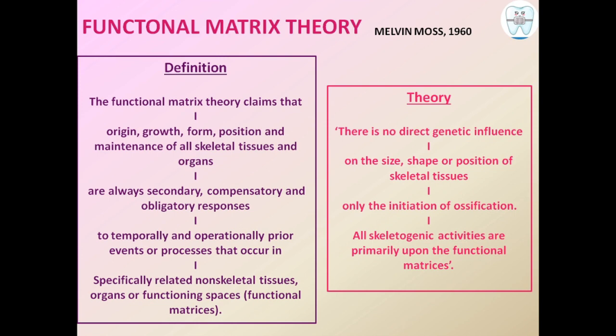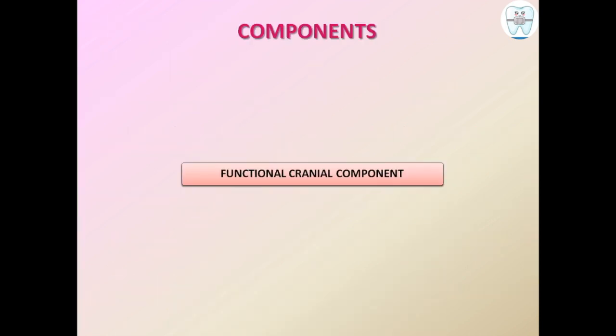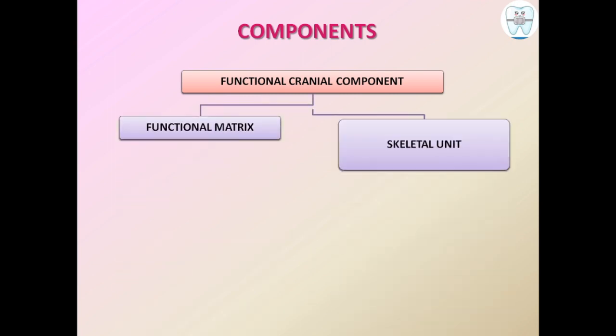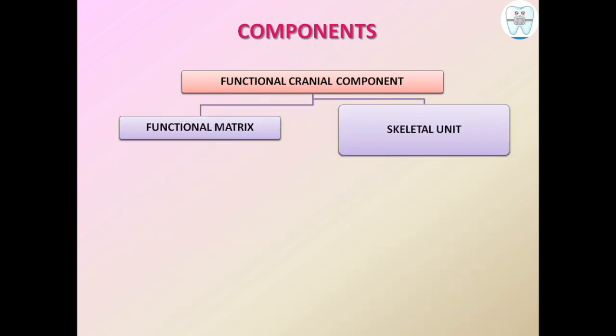The activities of skeletal tissues — origin, growth, form, function, and maintenance — are all governed by functional matrices. The components of Functional Matrix Theory, also called the Functional Cranial Component, are two: one is the Functional Matrix and the other is the Skeletal Unit.